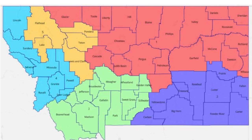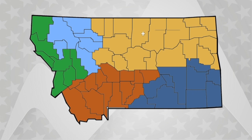She also moves Deer Lodge County, which includes Anaconda, into district four. But her proposed districts leave district one about five and a half percent above the ideal population, and district four about four percent above the ideal population.